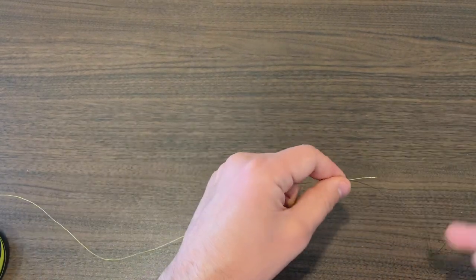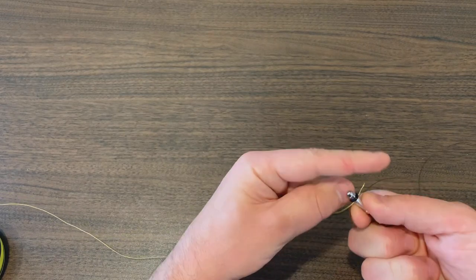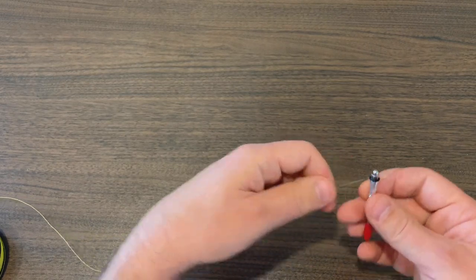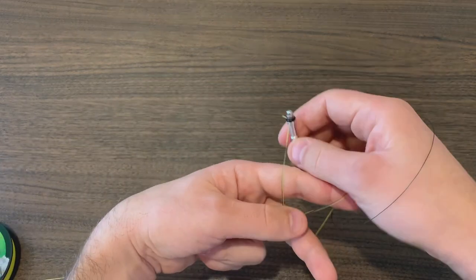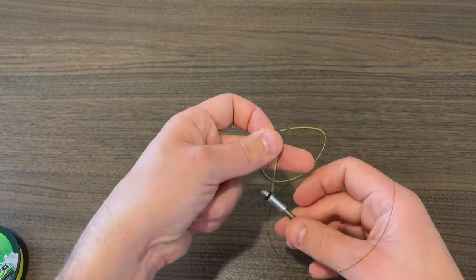You're going to grab the very end of both of them. Then you're going to come back and just do a simple overhand knot like so.